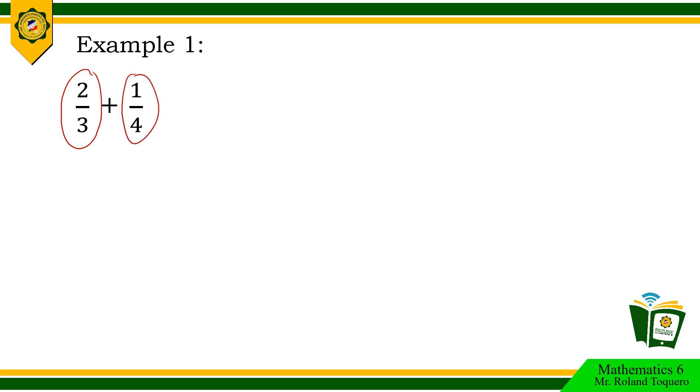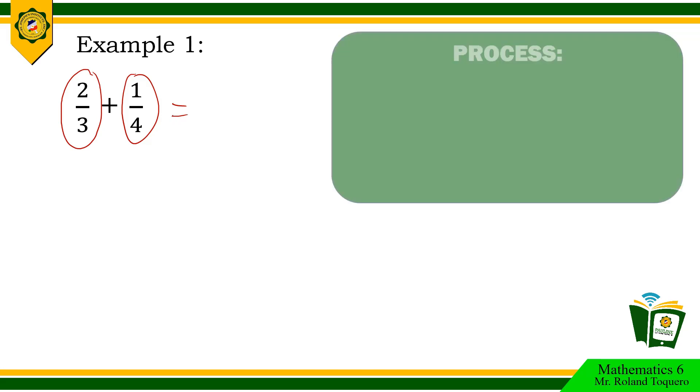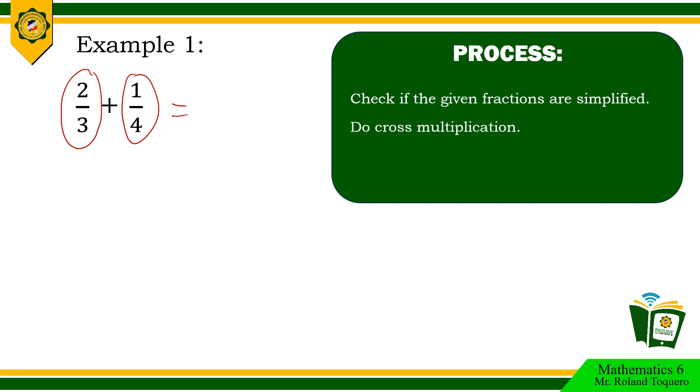Therefore, we are now ready to proceed to the next step. Let us do cross multiplication. 2 times 4 equals 8. Plus. 3 times 1 equals 3. All over. 3 times 4 equals 12.